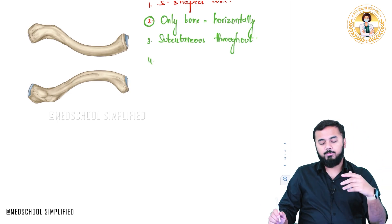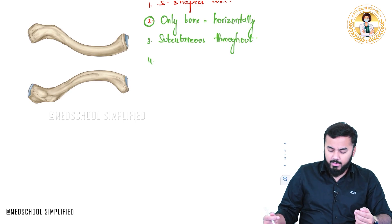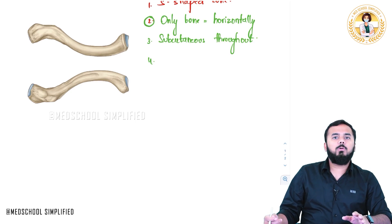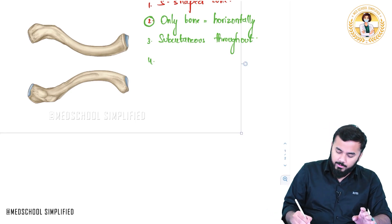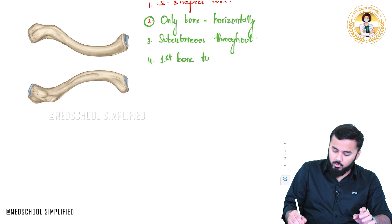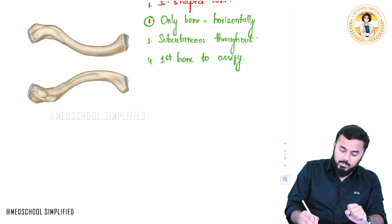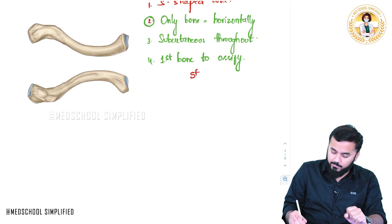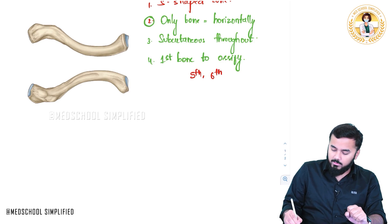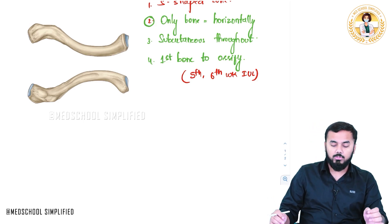The fourth important point, which has been asked many times repeatedly in exams, is that the clavicle is the first bone in the body to undergo ossification. The ossification takes place at the fifth to sixth week of intrauterine life — this is the first bone that undergoes ossification.